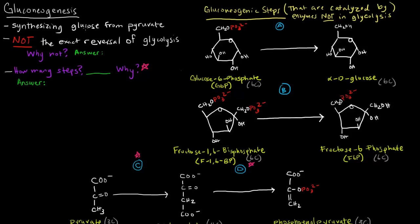So we're synthesizing glucose from pyruvate, which is essentially sort of the reversal of glycolysis, but it's not the exact reversal of glycolysis. The reason why is because there were three irreversible steps in glycolysis. Those three irreversible glycolytic steps can't be reversed by the same particular enzyme — each needs a different enzyme.